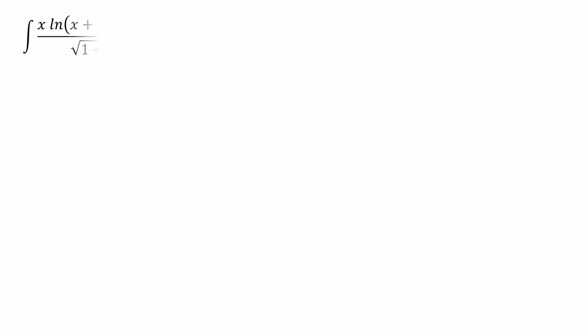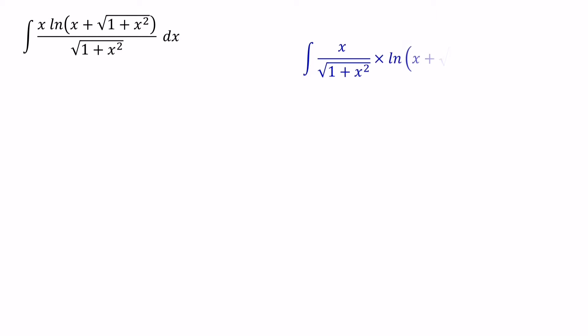Before we start anything, let's think about how we can solve this question. Basically, here we have a product of x over square root of (1 plus x squared) and ln(x plus square root of (1 plus x squared)). So we can use the integration by parts method to simplify this integral.